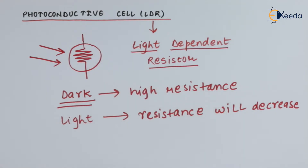If I want to describe LDR, I can say that it is a type of passive transducer. It is not generating any voltage. Just the resistance is varying on the basis of the light. We are just changing one form of energy into another. We are not producing or generating any energy. That is why it is a kind of passive transducer.